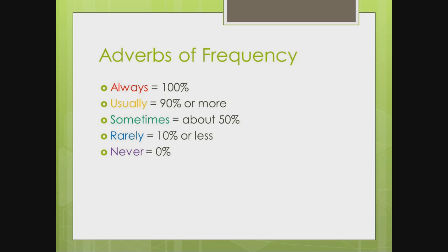If we always do something, we do it 100% of the time. If we usually do something, we do it 90% of the time or more. If we sometimes do something, we do it about 50% of the time — maybe more, maybe less. If we rarely do something, we only do it 10% of the time or less. If we never do something, we do it 0% of the time.